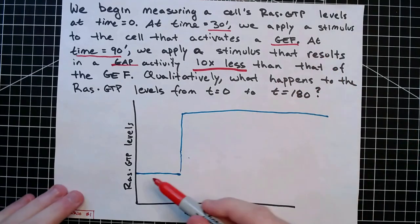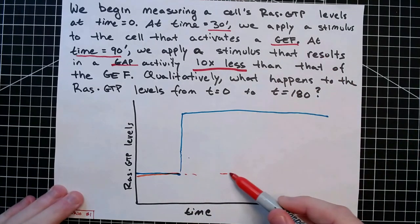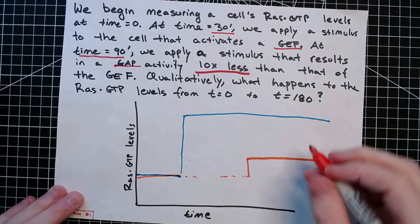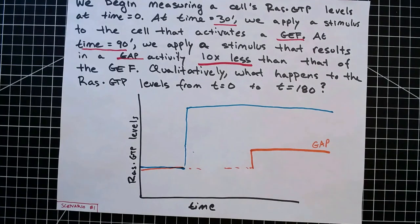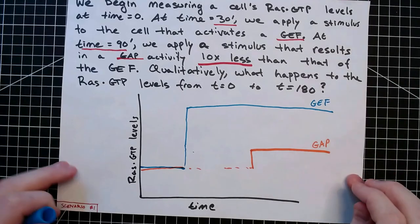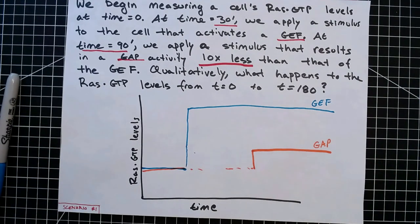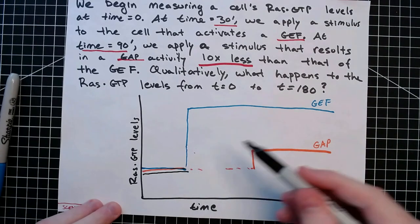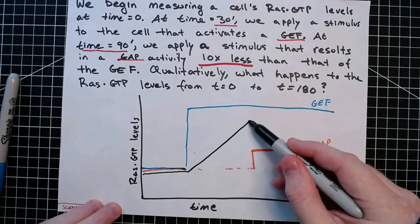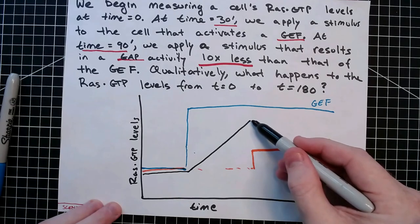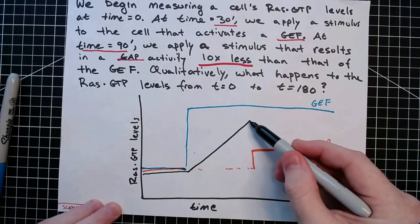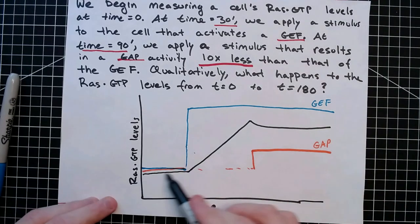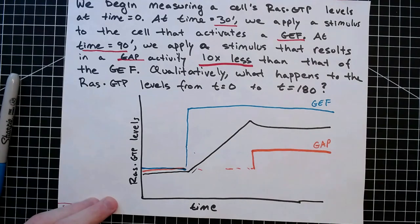Thinking about GAP activity: it's initially low, and then at 90 minutes it goes high, but that GAP activity is 10 times less than that of the GEF. So if we look at this and ask what's going to happen to RAS-GTP levels over time: initially there's going to be some level of RAS-GTP inside the cell, and when this GEF activity comes along, those levels are going to start to rise. Then when we apply the GAP, they'll decrease by some amount, but because the GEF is much higher in activity than the GAP, we'd expect these levels to level off to some lower but still elevated level.